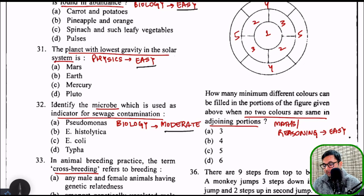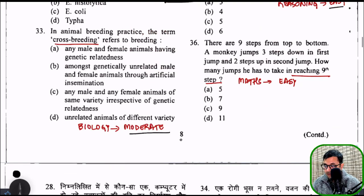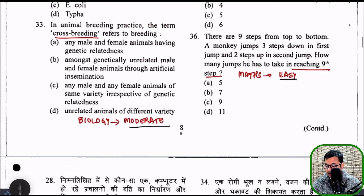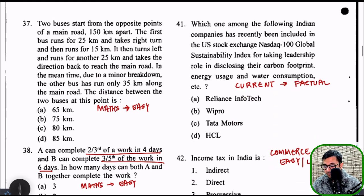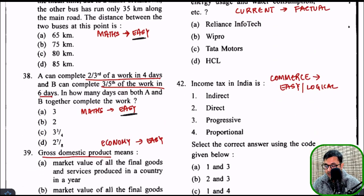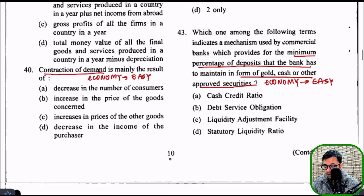Question number 35 was from Maths or Reasoning — a very logical, easy question. Question 36 was a very easy Maths question. Question 37 was again from Maths, easy. Question 38 was again from Maths, easy. Question 39 was from Economy — very easy; GDP's definition was asked. Question 40 was about contraction of demand — basic and easy, which I have studied.